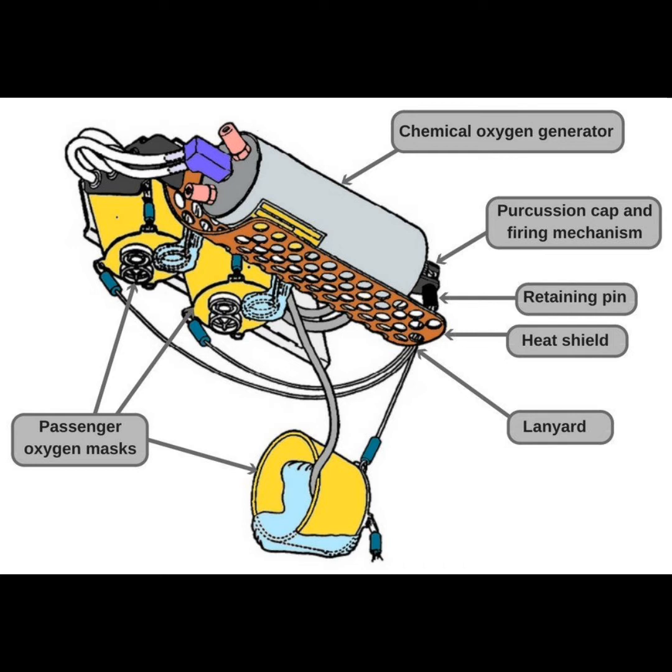What are the three ways supplemental oxygen can be carried in an aircraft? Liquid, high pressure gas, or chemical. What is the main chemical agent inside of an oxygen generator? Sodium chlorate. When burned, oxygen is generated.